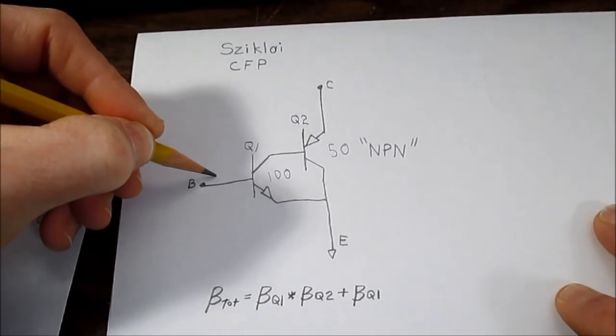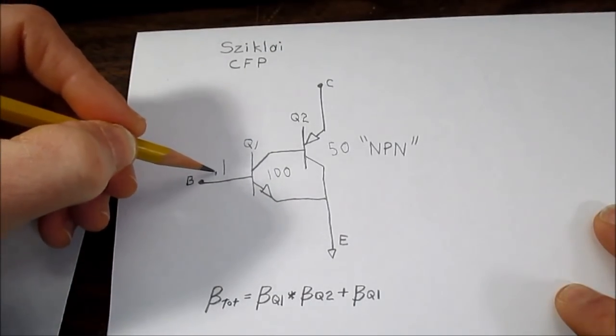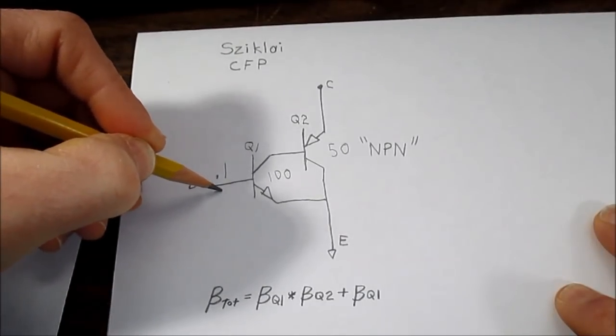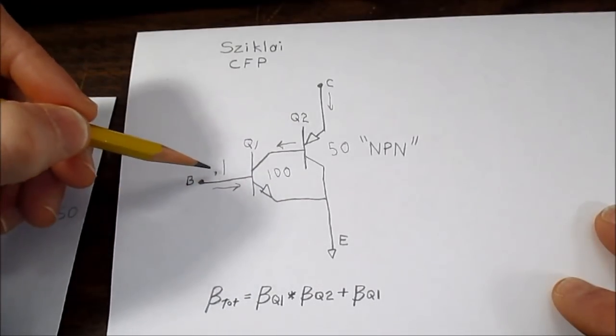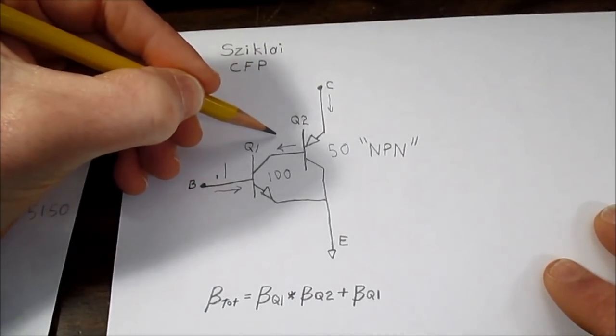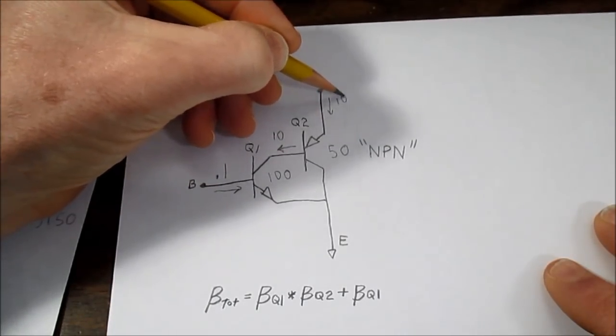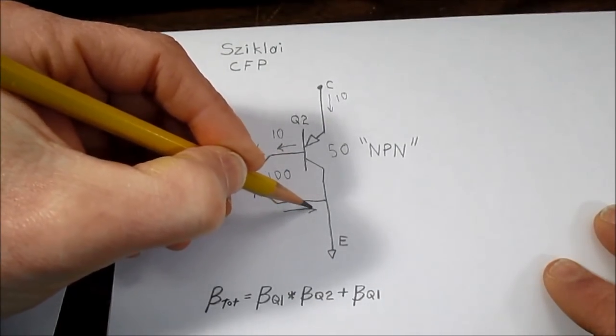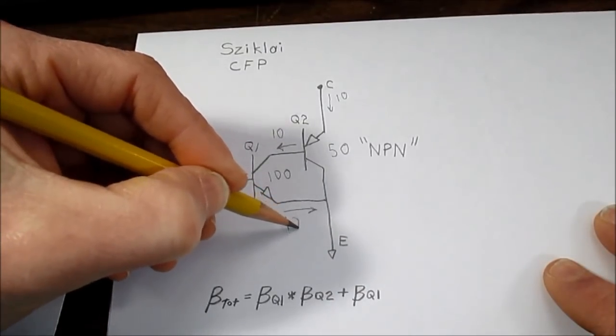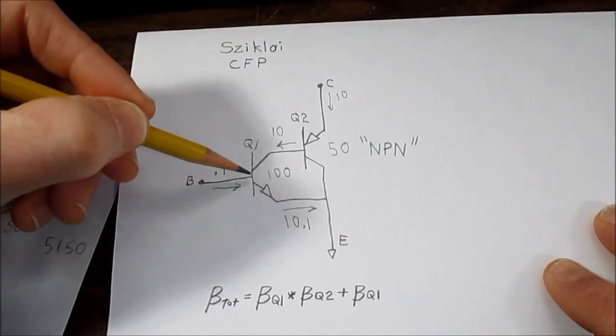We will put a hundred microamps into the base, so we'll just say 0.1 milliamp of current and we'll draw the arrow here. So with a beta of 100 multiplied by the base current of 0.1, that gives us a current of 10 milliamps flowing here and of course flowing here as well. The current in the emitter circuit would be 10.1.